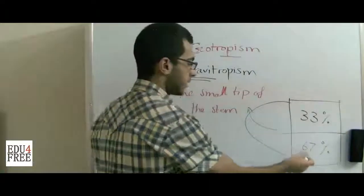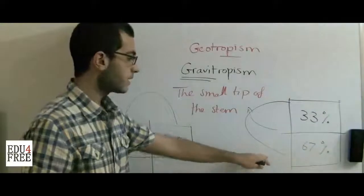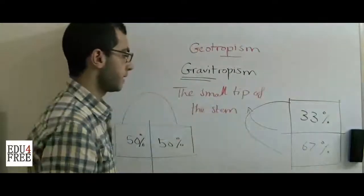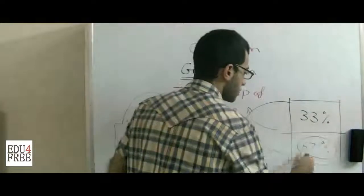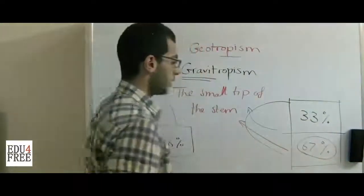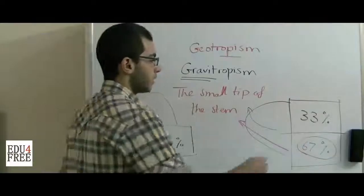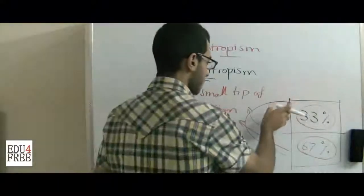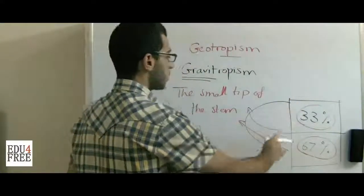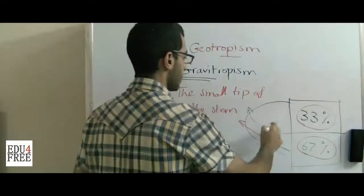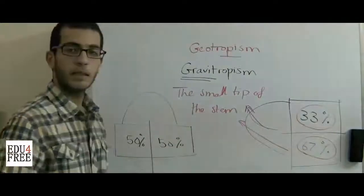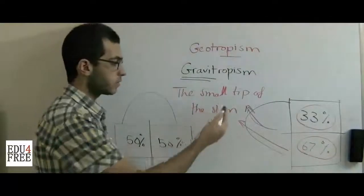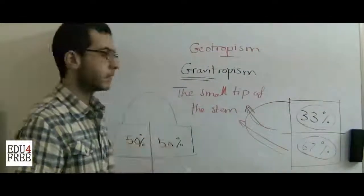More auxins are found at the part facing gravity, and 33% are found at the part away from gravity. The larger ratio of auxins induces more growth on that side, while the lower ratio on the side away from gravity diminishes growth. So growth increases on the gravity-facing side and the curvature takes this upward shape. Since the stem grows in the direction opposite to gravity, the stem is negatively geotropic.